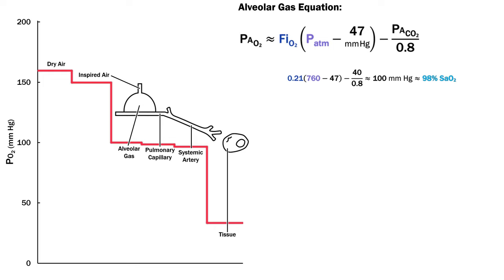With normal values, we get an alveolar partial pressure of 100 mmHg, as seen on the graph, which is an oxygen saturation of about 97-98. We frequently increase the FiO2 for patients, but there are sometimes factors that decrease it.